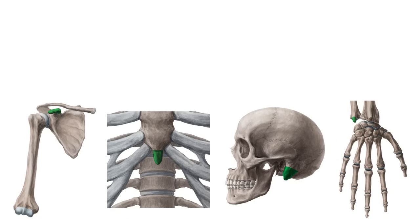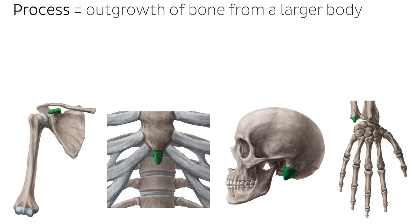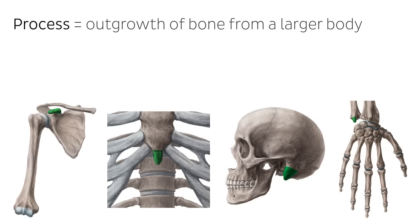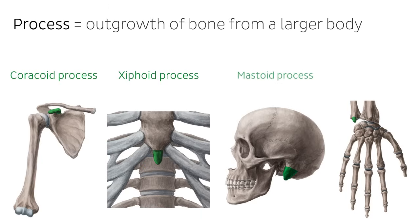Let's try a couple of examples. Process refers to an outgrowth of bone from a larger body. Pictured here are the coracoid process on the scapula, the xiphoid process on the sternum, the mastoid process on the skull, and the styloid process on the ulna.